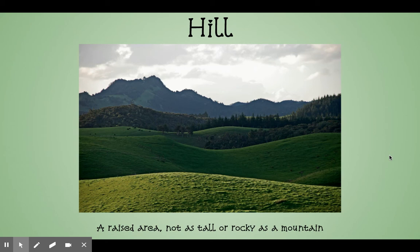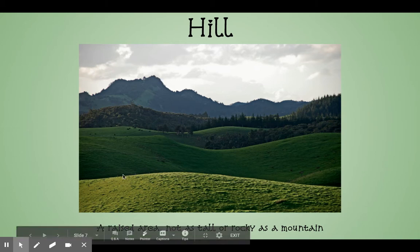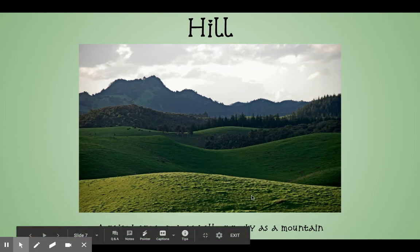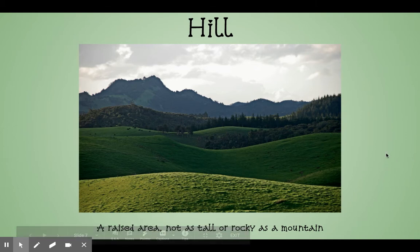Hill. A hill is a raised area, not as tall or rocky as a mountain. Mountains are very tall and usually come to a point. However, hills — see these? These are rolling hills. They're usually smaller, but the land still goes up. A lot of times you'll see green on them because there's grass growing on them. That's what makes them a hill.